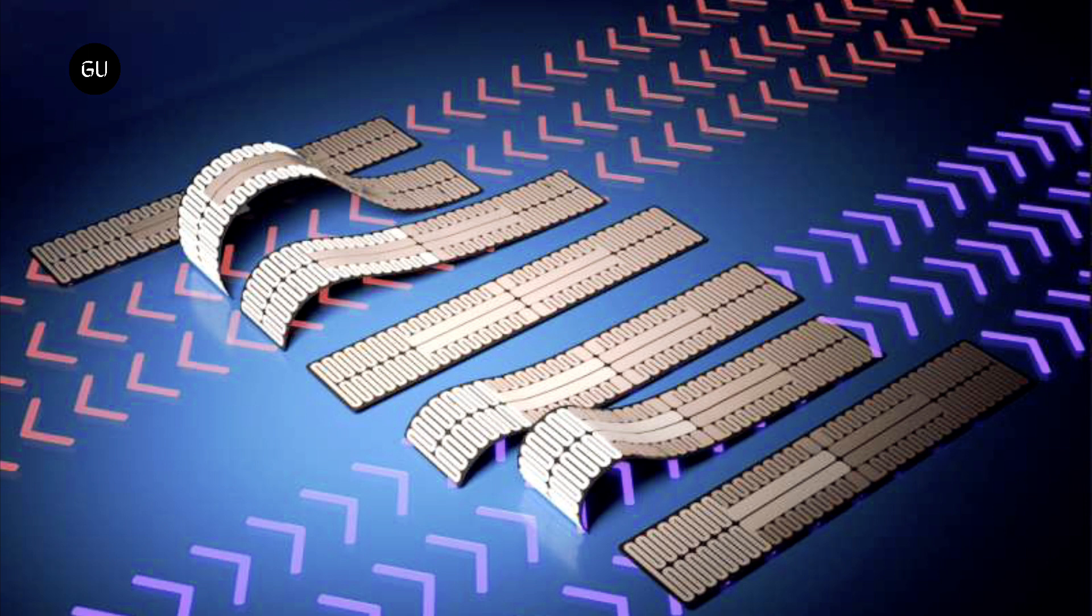The researchers can control which sections of the nanowire pattern heat up by applying an electric current to different lead points, and can control the amount of heat by applying more or less current.